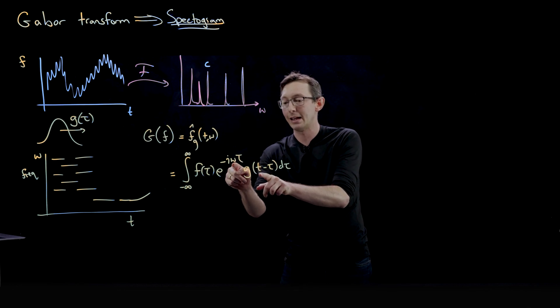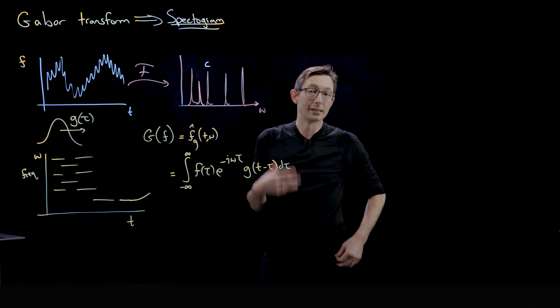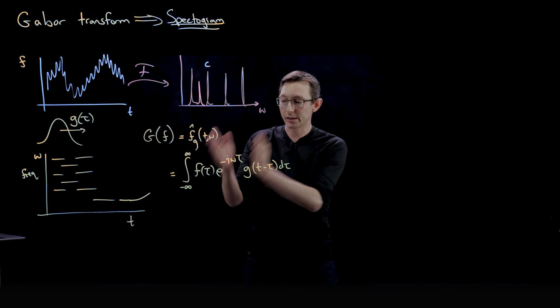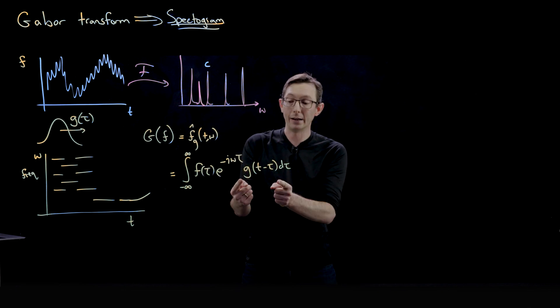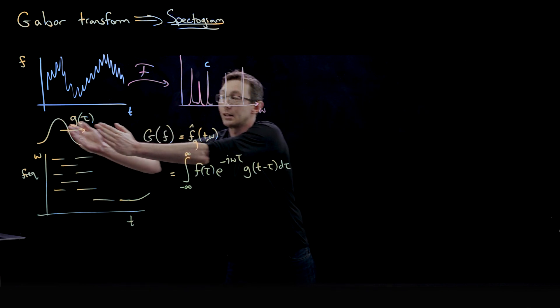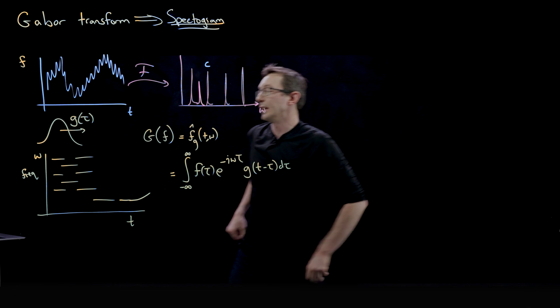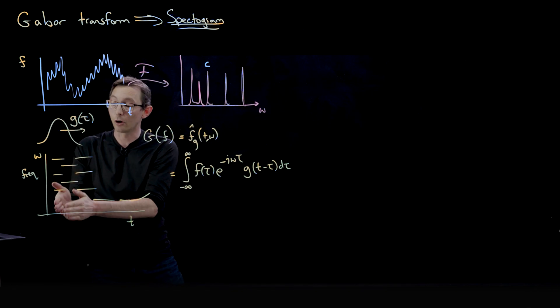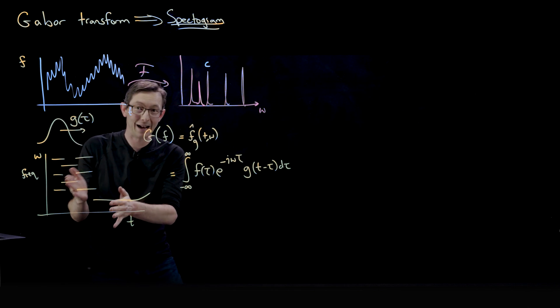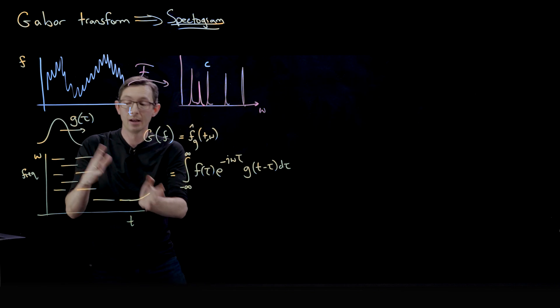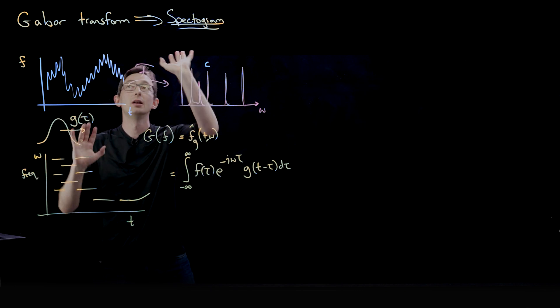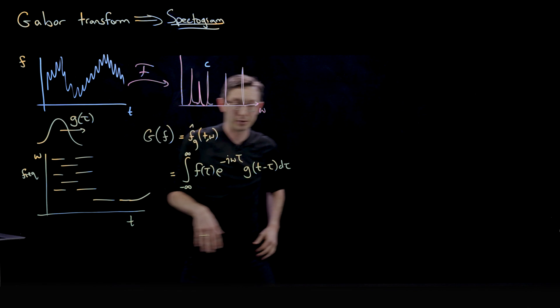But that is in this sliding window that's pinned to this particular time t. So now I have something that's a function of both omega and t in this spectrogram. So this is the Gabor transform. It's just a Fourier transform weighted by this little Gaussian that is sliding across in time. And so it gives you some resolution of what frequencies are active, but it also gives you some resolution of when those frequencies are active in time. So it's this kind of time frequency diagram. Very, very useful Gabor transform and spectrogram.